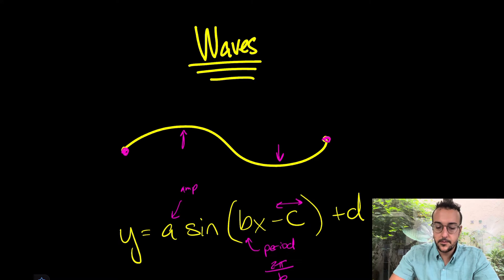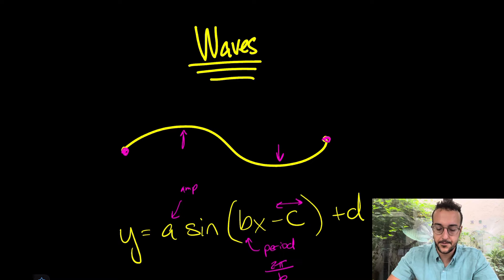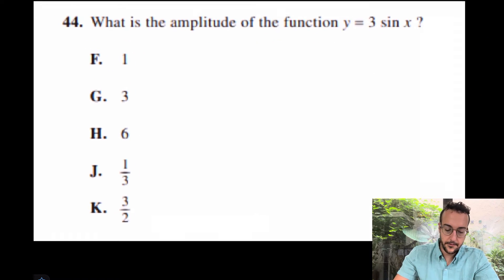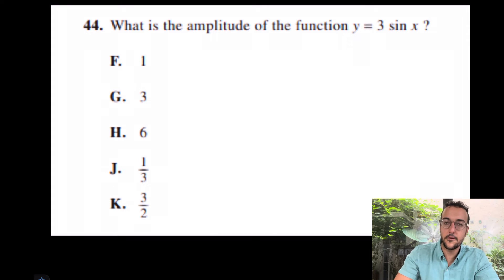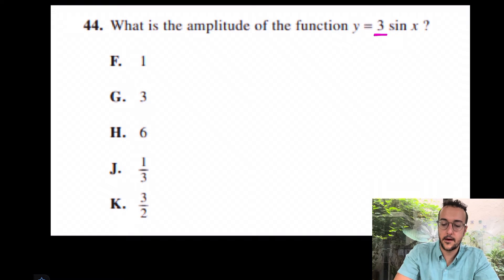Every single one of these components is tested on the ACT. There are examples of each one being tested, but today we're going to be focusing on parts A and B. The translations aren't too hard typically. Let's take a look at some actual questions. Come over here with me to number 44 from a real ACT. It says, what is the amplitude of the function y equals 3 sine x? They couldn't have made this more free. Look at this.